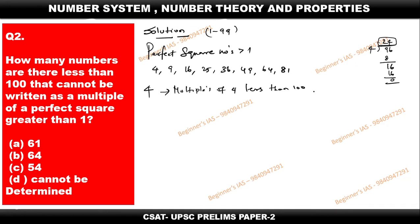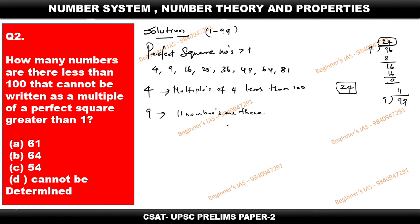Next, check multiples of 9 less than 100. The largest is 99, and 99 equals 9 times 11, so there are 11 multiples of 9 less than 100.